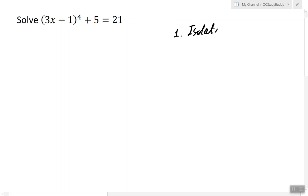In the first step we isolate the power term and we write the equation in the form where we have something raised to the power n equals a number.